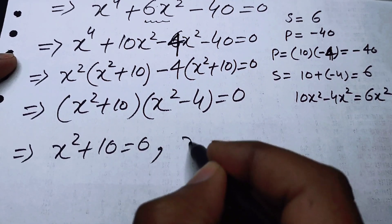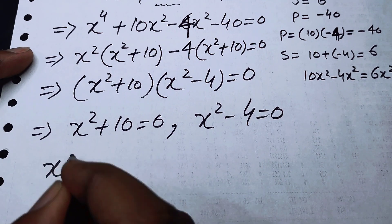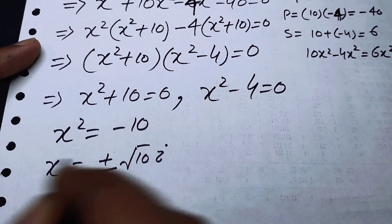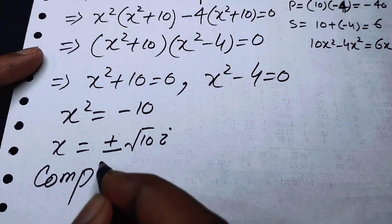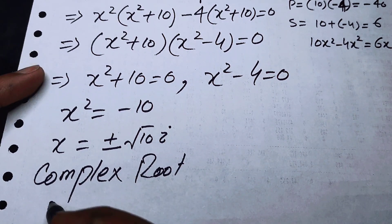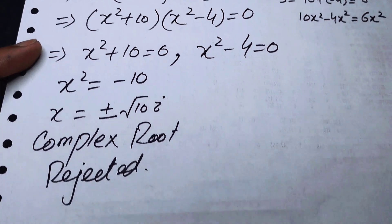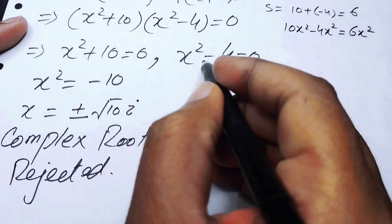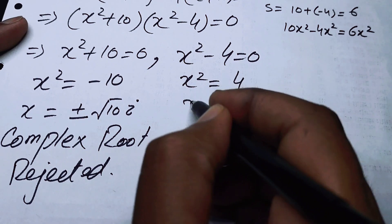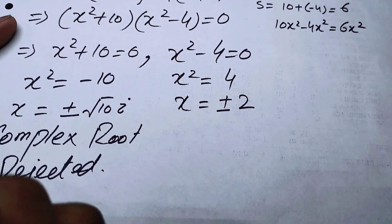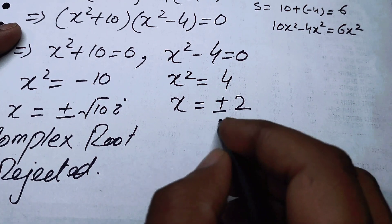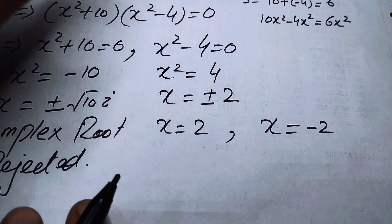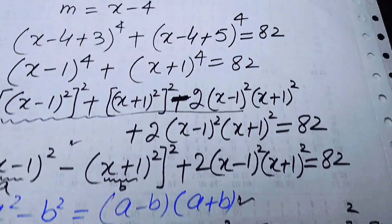Setting each factor equal to zero: X² + 10 = 0 gives X = ±√(-10), which are complex roots and are rejected. From X² - 4 = 0, we get X² = 4, so X = ±2. These give real roots, so we proceed with X = 2 and X = -2.